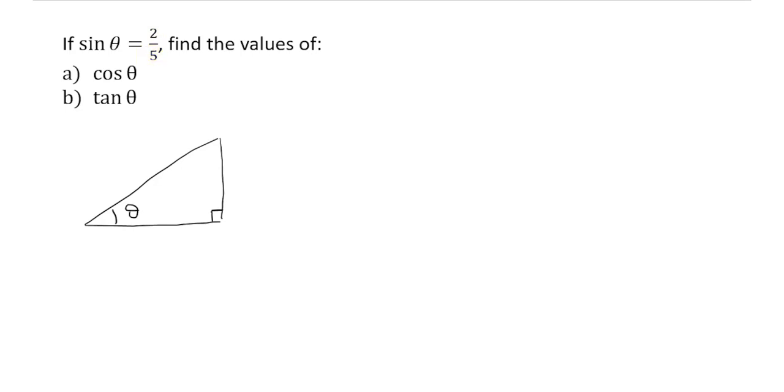remember, is opposite over hypotenuse. So opposite side is two, hypotenuse side is five. And we can now see from that triangle that sine theta is indeed two divided by five.